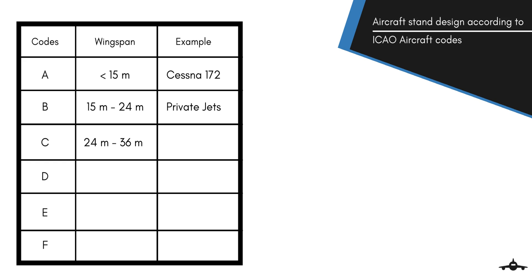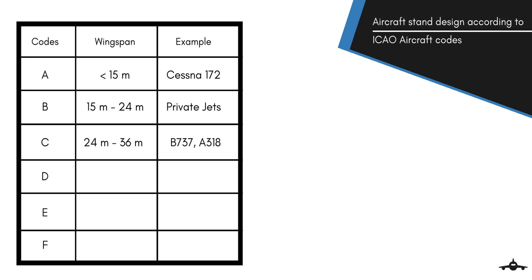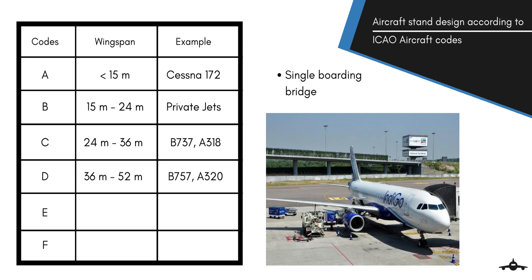Code C aircraft are narrow body aircraft with a wingspan of 24m to 36m, for example a Boeing 737. Airport stands are designed according to which type of aircraft is expected to visit most frequently during airport development. Code C aircraft require a single passenger boarding bridge configuration. Code D are also narrow body aircraft with a wingspan of 36m to less than 52m, for example an Airbus A310. They also engage a single passenger boarding bridge, and often an aircraft stand designed for Code C aircraft can also handle Code D aircraft.